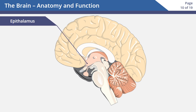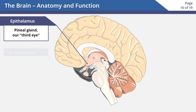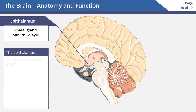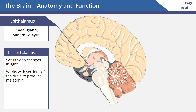The epithalamus connects the limbic system to other parts of the brain. The epithalamus, or pineal gland, is also called our third eye. It's sensitive to changes in the light in our surroundings. It works with other sections of the brain and produces melatonin, which helps control our body and sleep rhythms.